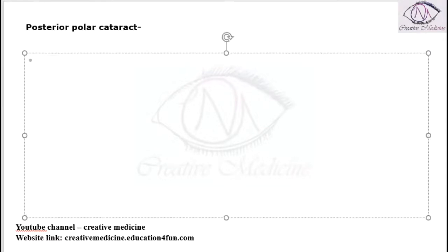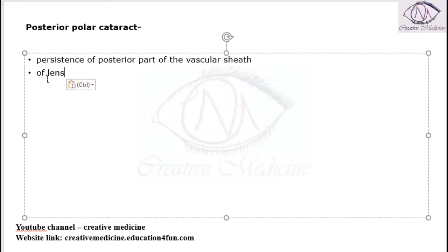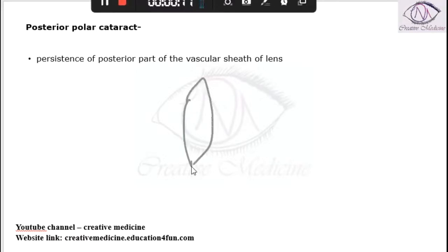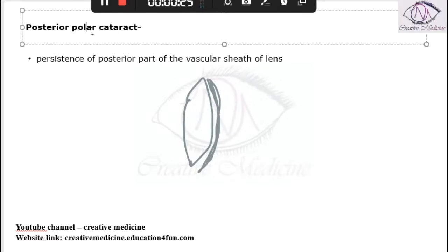Posterior polar cataract can mainly occur due to the persistent posterior vascular sheath of the lens. If this is the lens and if there is a posterior vascular sheath and if this persists, this can result in a posterior polar cataract. So, persistence of the posterior vascular sheath results in posterior polar cataract.